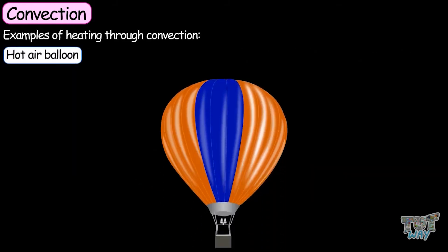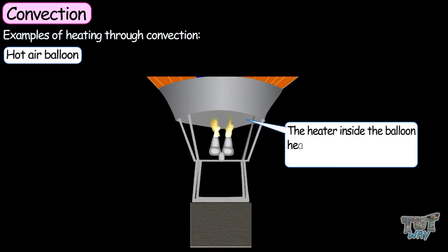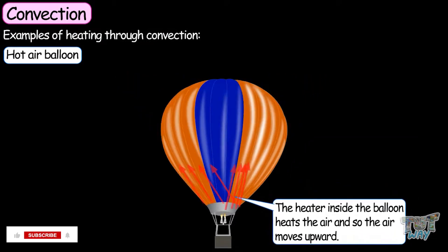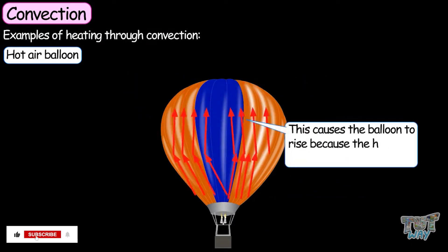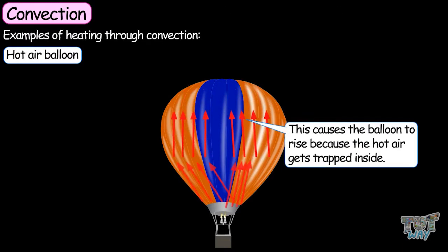Hot air balloons are also examples of heat transfer through convection. A heater inside the balloon heats the air and so the air moves upwards. This causes the balloon to rise because the hot air gets trapped inside.